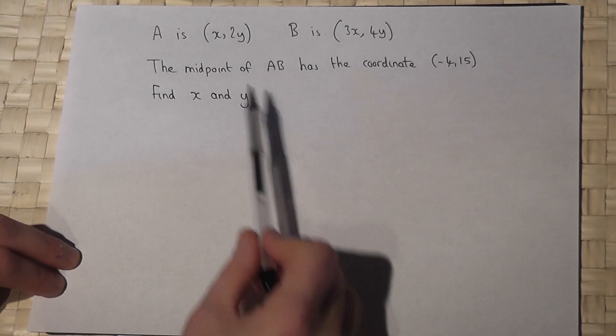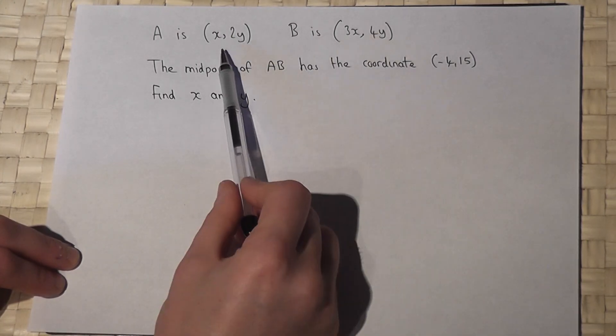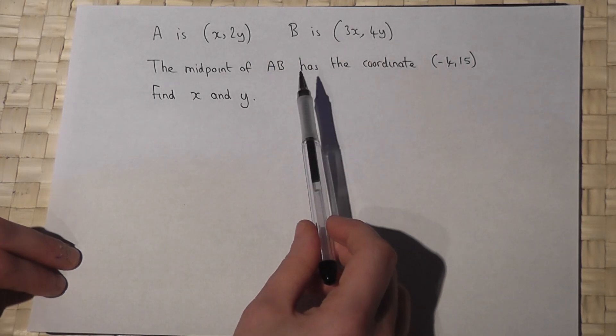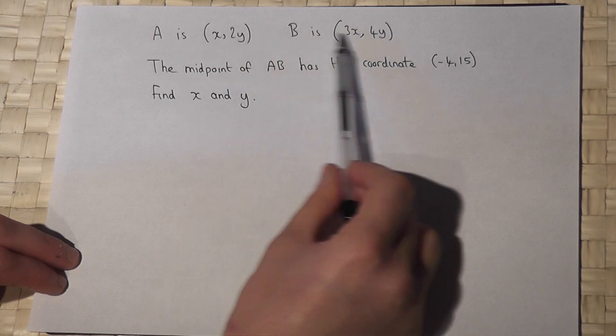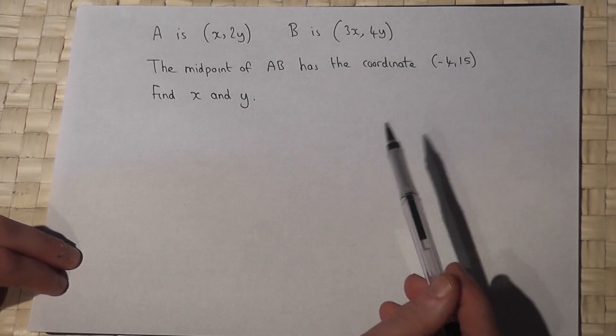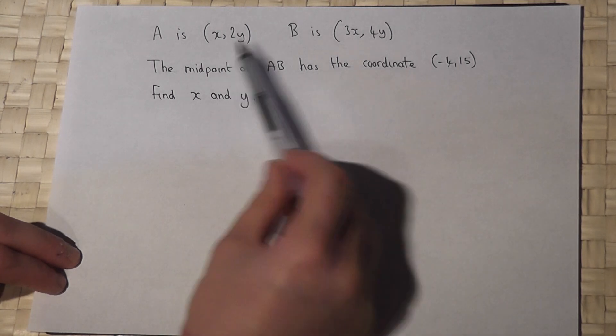This problem is quite a nice problem involving two coordinates which are unknown, they're in terms of x and y. And we're told that the midpoint of these two coordinates has a value minus 4 comma 15. And the question says find x and y.